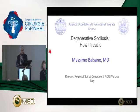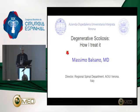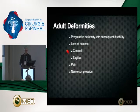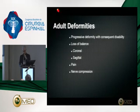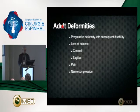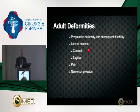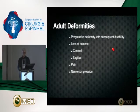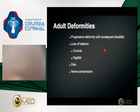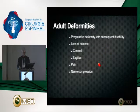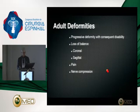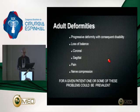Thank you again for the invitation to the committee. We are talking about adult deformity, which has consequent disability. We can see loss of balance — maybe coronal, maybe sagittal — and we have to deal with pain and nerve compression. For a given patient, one or some of these problems could be prevalent.